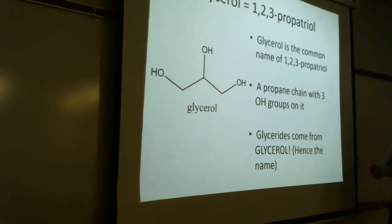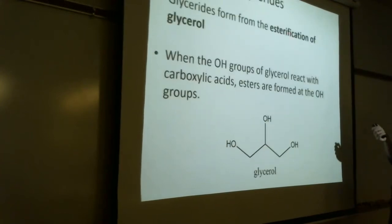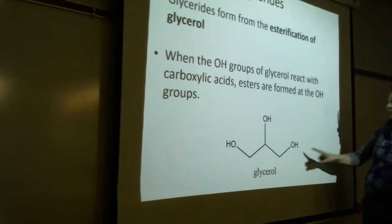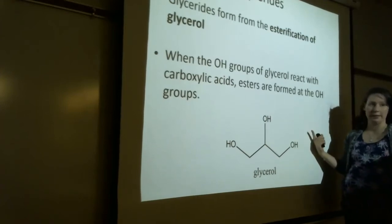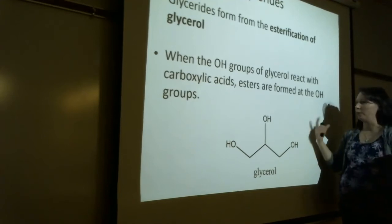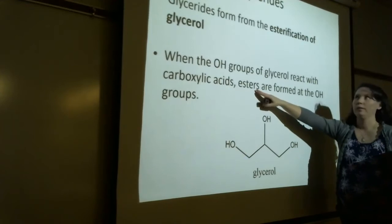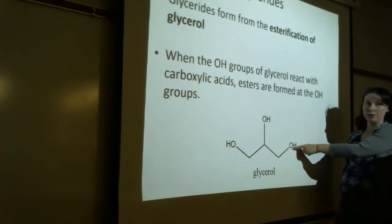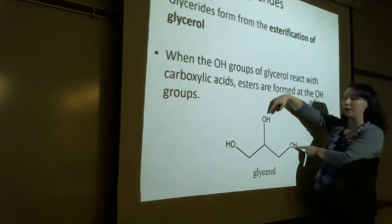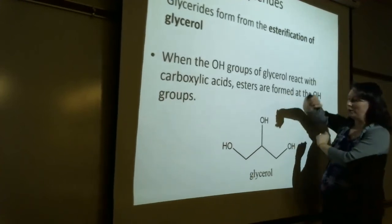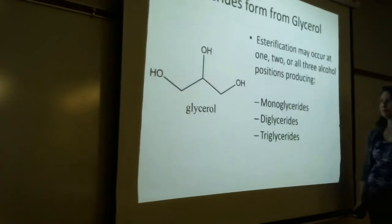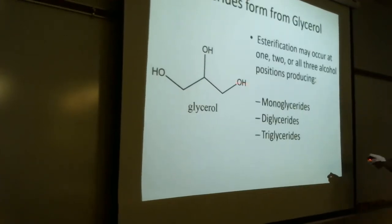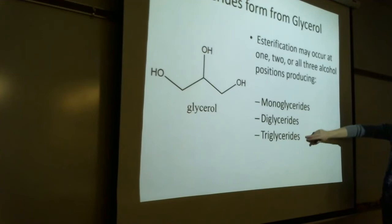What turns glycerol into a glyceride? An esterification reaction. Alcohol plus carboxylic acid gives you an ester — we covered that last week. You can esterify one OH to get a monoglyceride, two to get a diglyceride, or all three to get a triglyceride. So mono, di, or triglycerides come from esterifying one, two, or all three hydroxyl groups of glycerol.